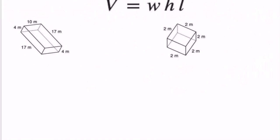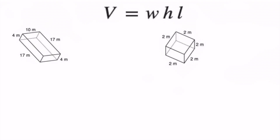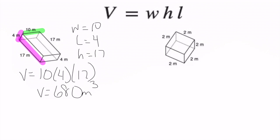Let's look at this page. So on this one, again, height, width, length, doesn't matter which order you go in. So we have 10, we have 4, we have 17. So volume equals 10 times 4 times 17, which will give us a volume of 680 meters cubed.